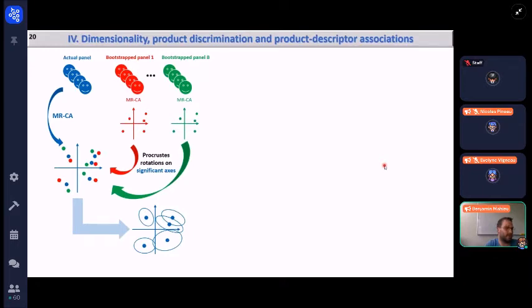The first one of these analyses is deriving confidence ellipses for the product coordinates in the MRCA space. So it is based on a total bootstrap procedure where the Procrustes rotations are only performed on the significant axis to avoid underestimating the variability of the products.